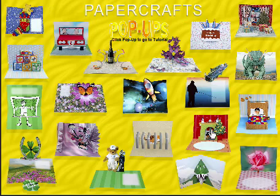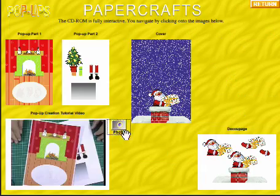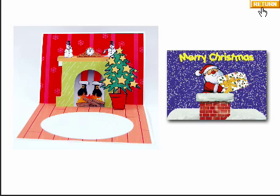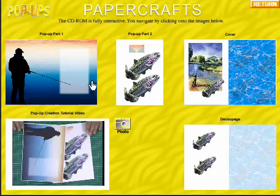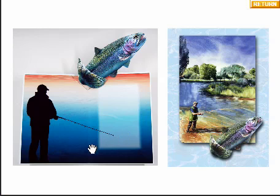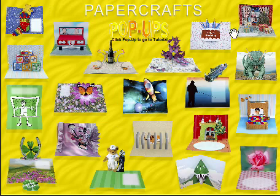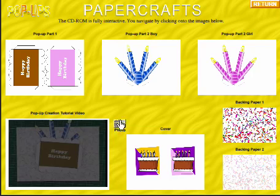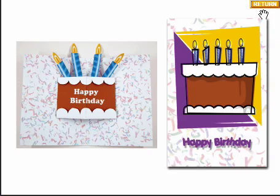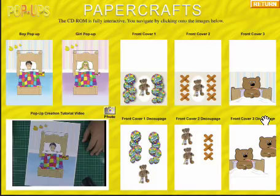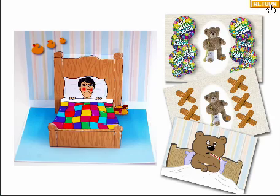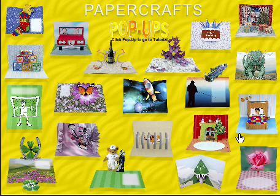We've got another Christmas one — Father Christmas dangling down into the fireplace. You can either add the flames or take them out — that's an optional choice. There's The Fisherman: this giant rainbow trout leaps out of the paper as you open up the card — so simple to make and so effective. We've got a birthday cake card — open it up and the birthday cake rises out, with one for the boys in blue and one for the girls in pink. And last but not least, a lovely Get Well Soon card, both for boys and girls, complete with covers. I hope you enjoy the CD-ROM and this gives you a taste for what's on it.